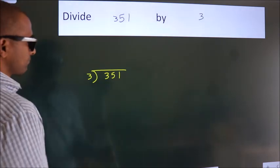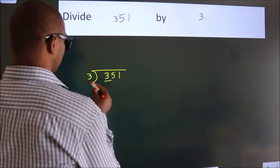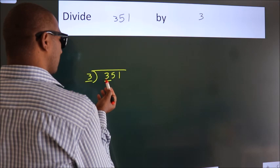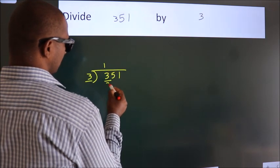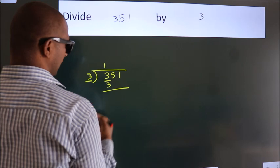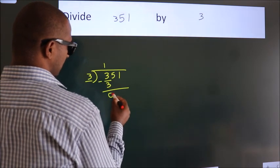Next, here we have 3. Here 3. When do we get 3? In 3 table, 3 once, 3. Now, we should subtract. We get 0.